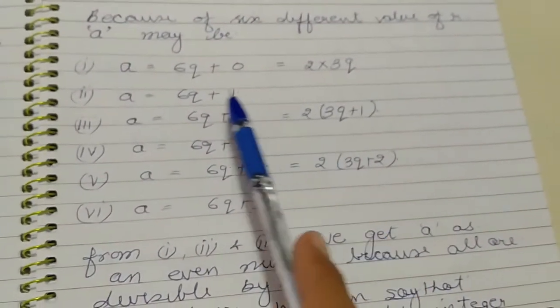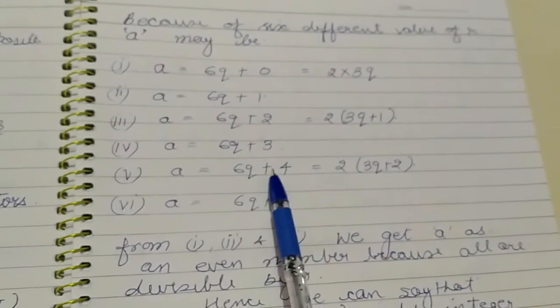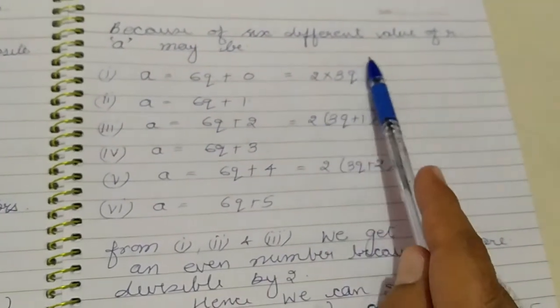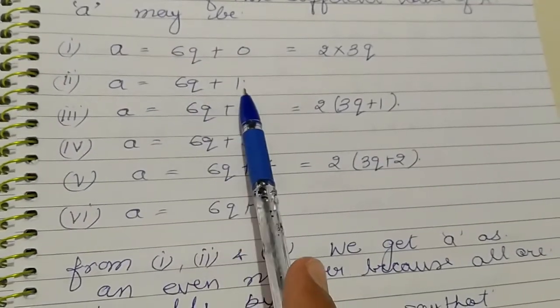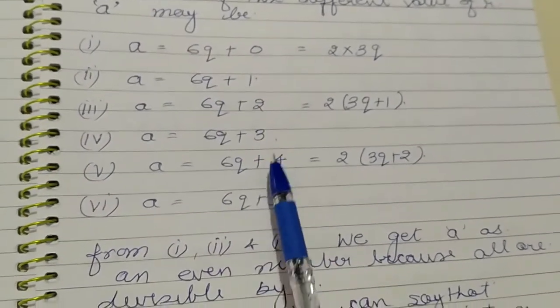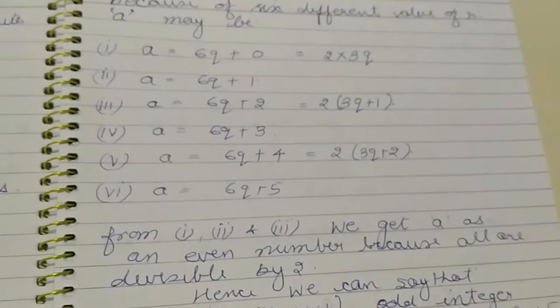We can observe here a equals to 6q, a equals to 6q plus 2 and a equals to 6q plus 4 are even numbers. So we can say that only 6q plus 1, 6q plus 3 and 6q plus 5 are the forms of odd positive integer.